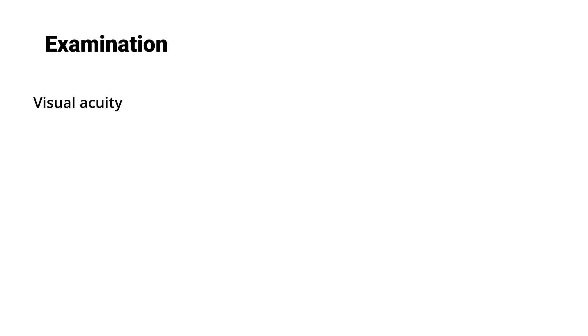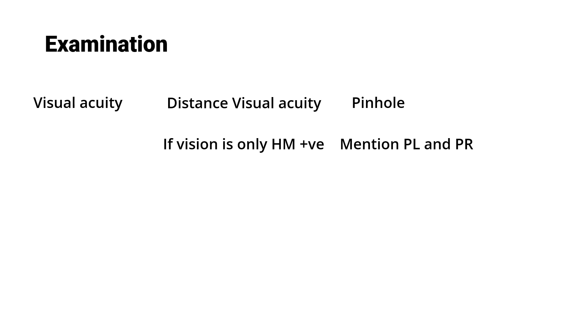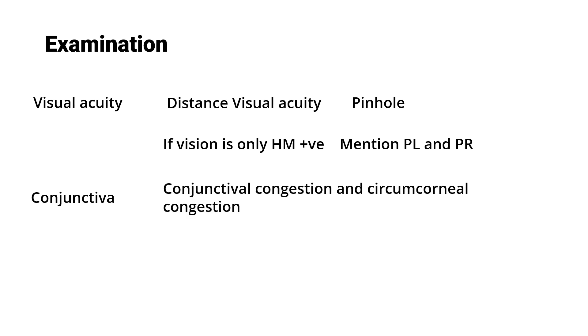For examination, start with visual acuity — distance visual acuity and pinhole. If vision is only hand movements positive, don't forget to mention perception of light and projection of rays. For the conjunctiva, mention conjunctival congestion and circum-corneal congestion, as corneal ulcer can have both.